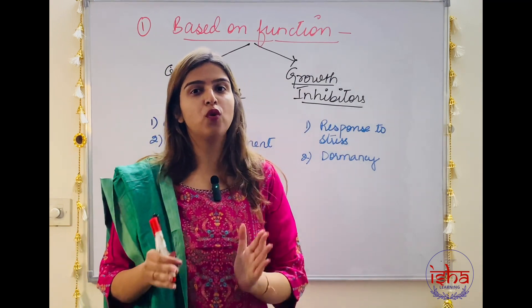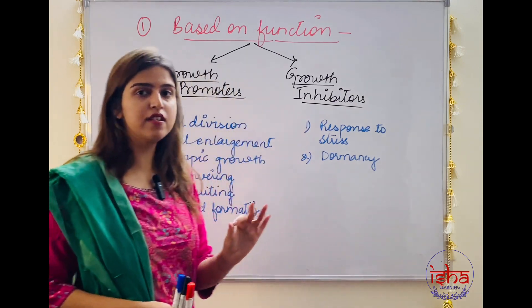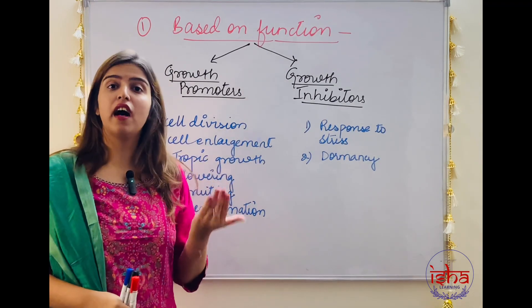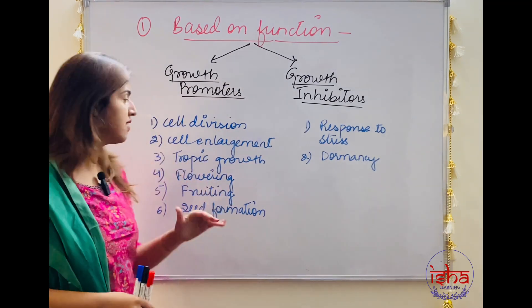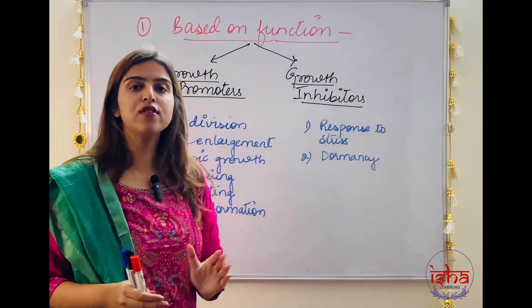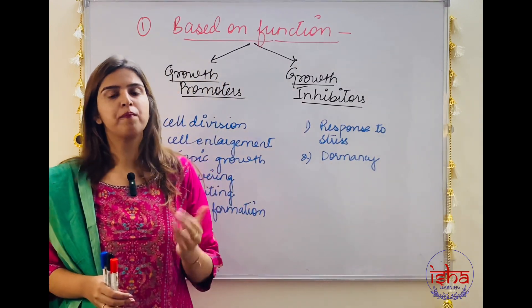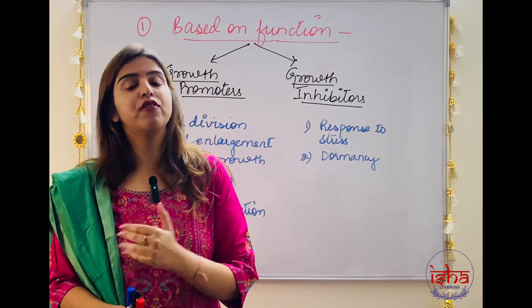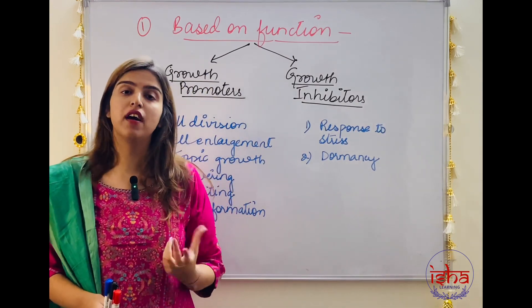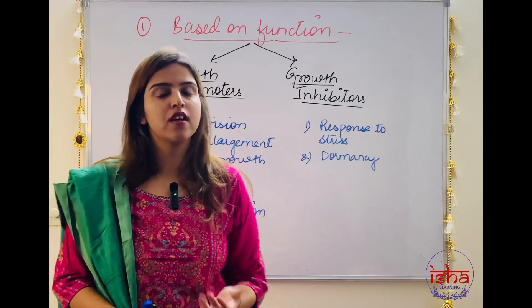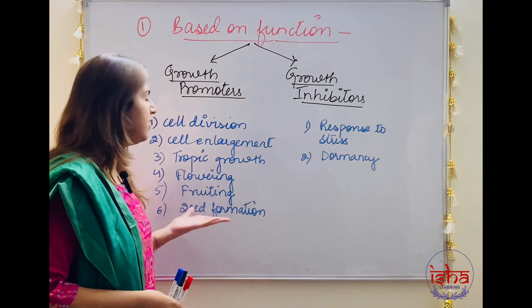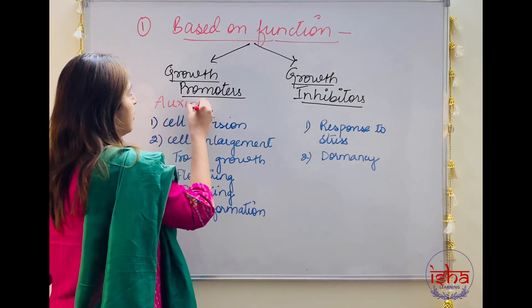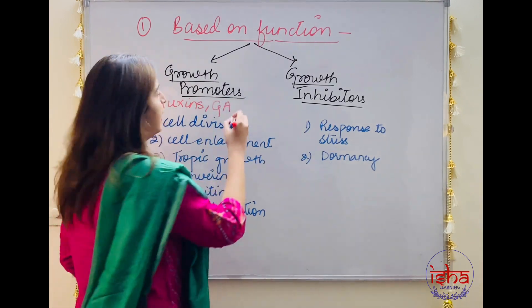To promote plant growth, several activities are involved. First, there is increased cell division so that the number of cells increases. Second, there is cell enlargement so that the size of cells also increases. Besides that, tropic growth is the response of the plant — it grows towards a stimulus. Phototropic growth is when shoots grow towards sunlight and roots grow away from sunlight, commonly observed in sunflowers. It also promotes flowering, fruiting, and seed formation. Plant growth promoters include auxins, gibberellic acid (commonly known as gibberellins), and cytokinins.